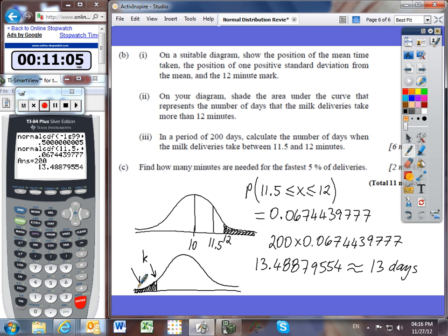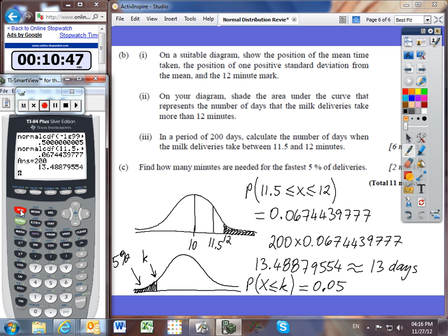We know that this probability, we've been given the probability is 5%. In other words, we know that the probability that our time is less than or equal to K minutes must be equal to 5% or 0.05. We've been given the percentage, so now we need to use inverse norm.